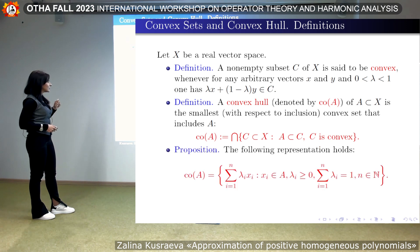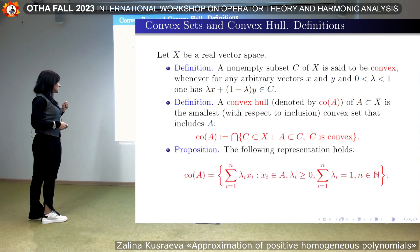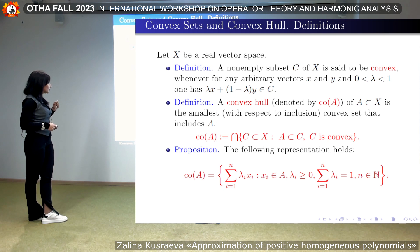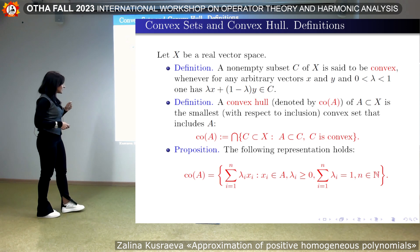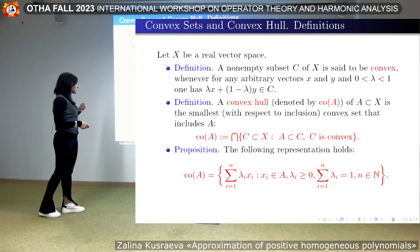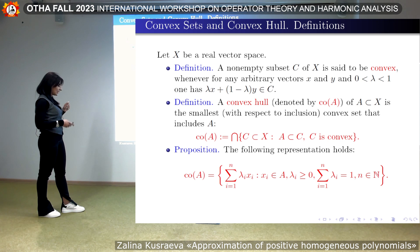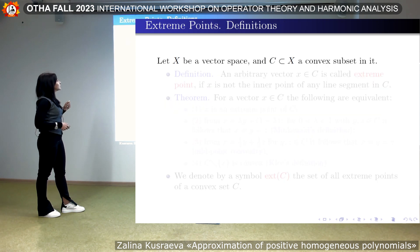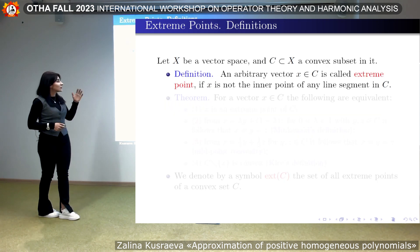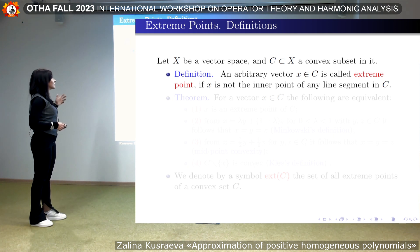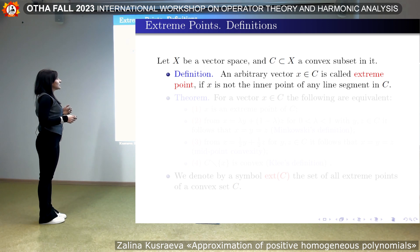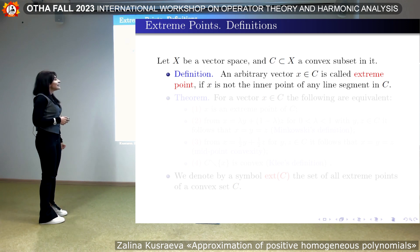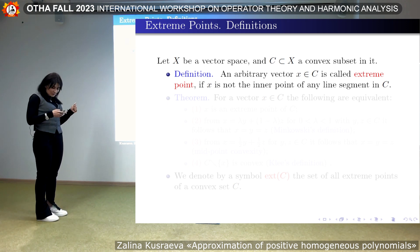It is not difficult to prove that the convex hull of an arbitrary set is calculated as follows. An arbitrary element x from C is called an extreme point if it is not the inner point of any line segment in C.